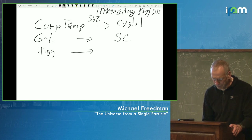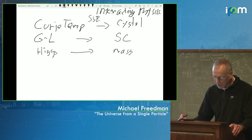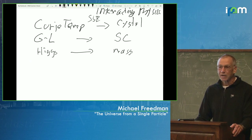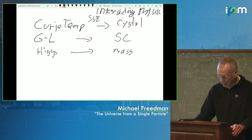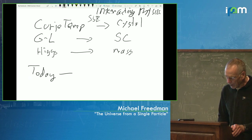A third example from high energy, which is a slightly different sort of symmetry breaking: the gauge symmetry Higgs mechanism leads to mass of other particles. This list is just meant to convince you that interesting things happen when you break symmetry. Today the symmetry breaking will be on the level of operators rather than states.